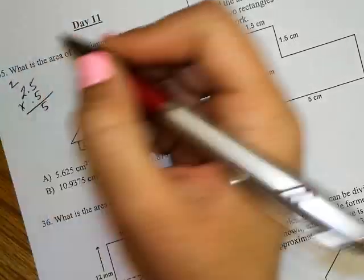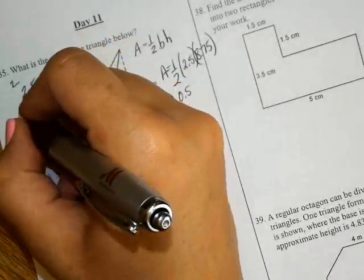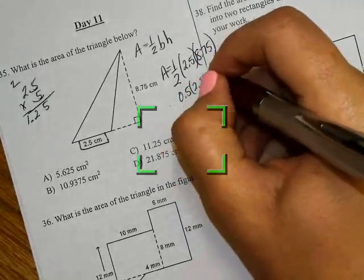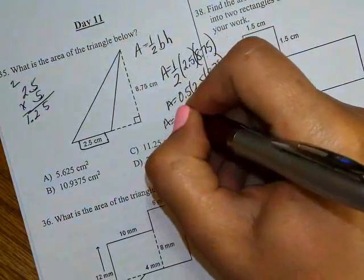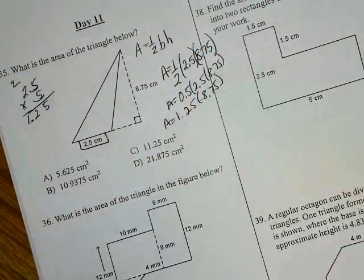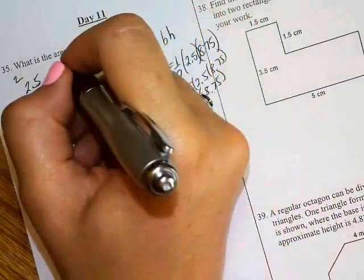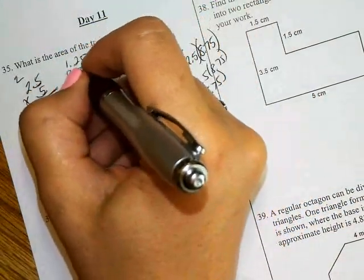What is that? Two decimals. So then you have area equals 1.25 times 8.75. We'll come over here to the side. 1.25, 8.75.